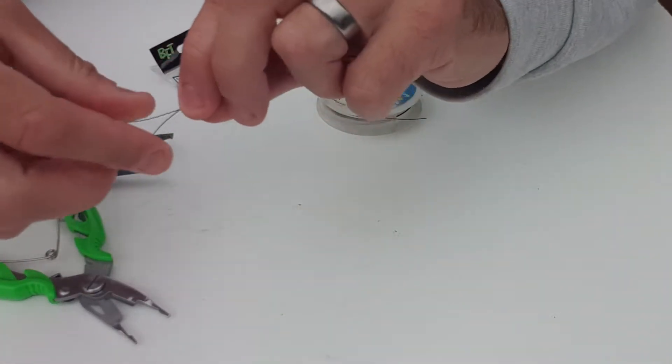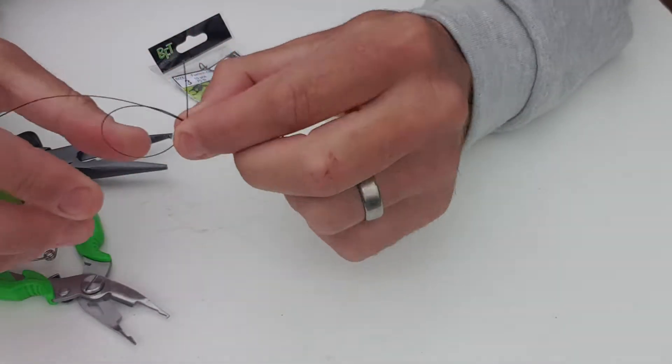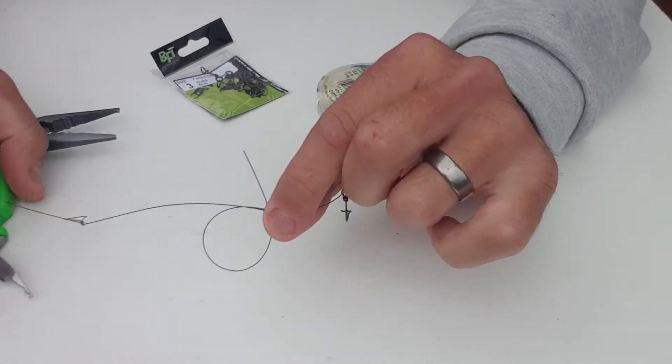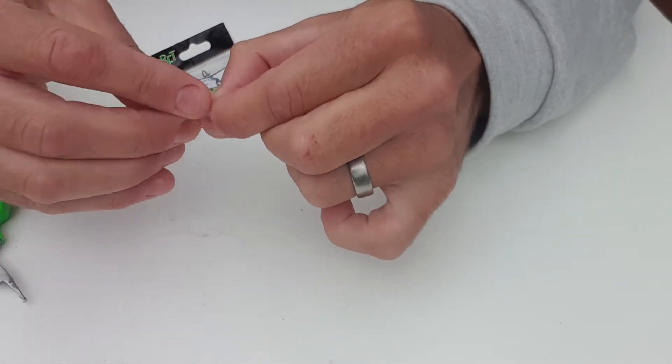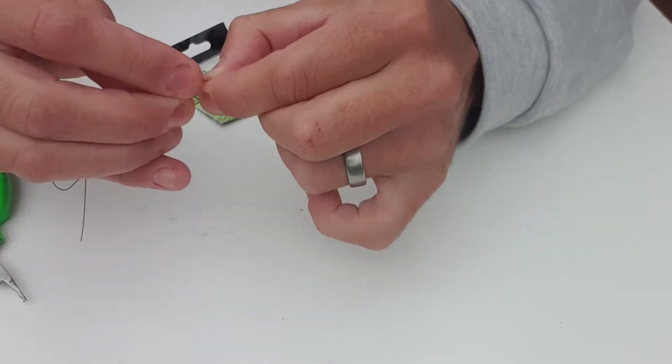And then what I'll do is just a three turn uni knot. So I'll bring the tag end back which will go about to the middle of the trace there and I'll go one, two, three basically. Three turns.